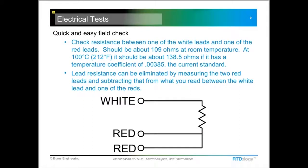And what you want to do is check between, in the case of a three-wire system, you'd want to check between the white lead and one of the red leads. You don't want to use both of them, just one of them, and measure that resistance.